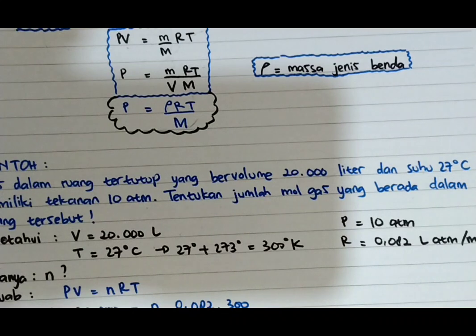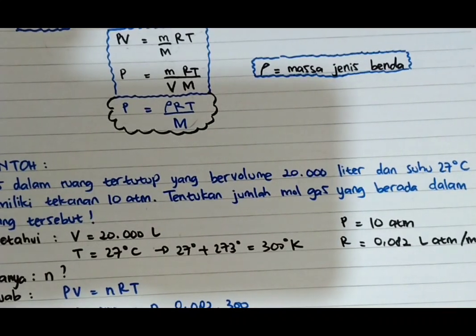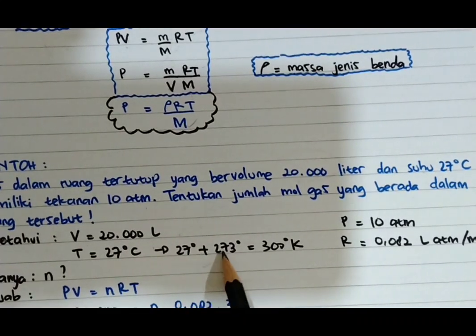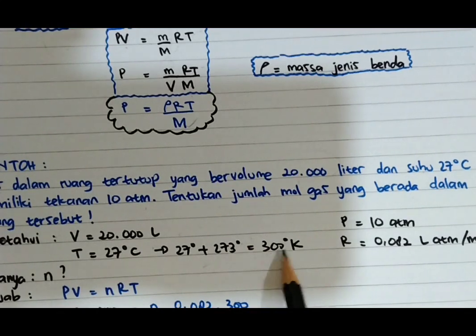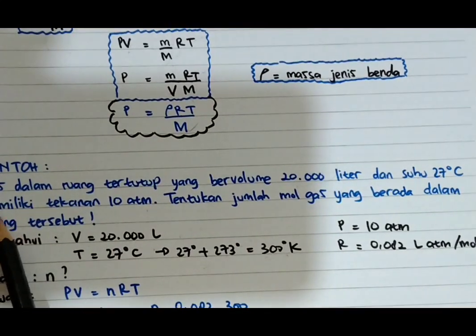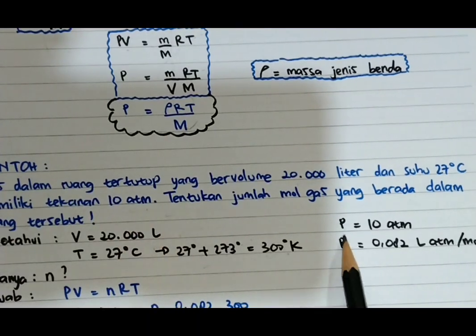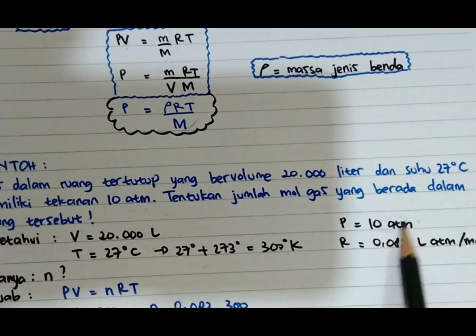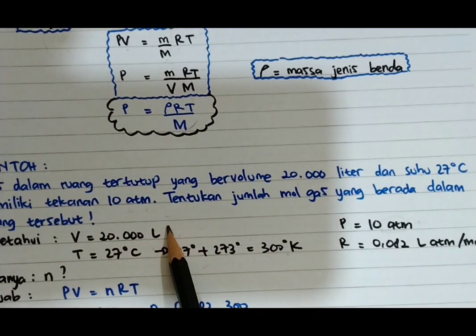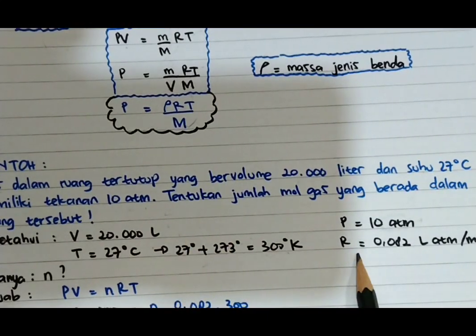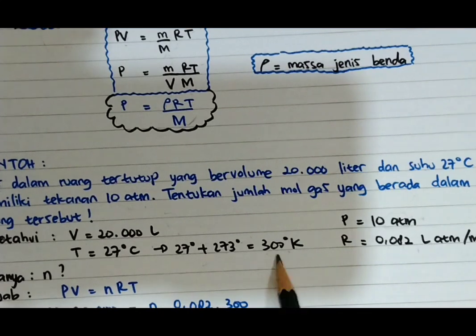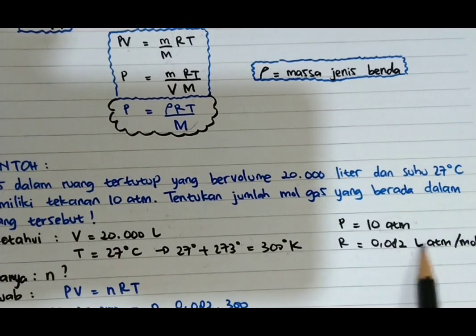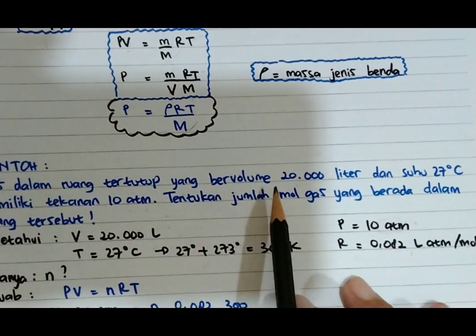Karena kita menggunakan hukum gas ideal, derajat suhunya harus kita ubah ke Kelvin dulu dengan cara 27 derajat plus 273 derajat menjadi 300 Kelvin. Memiliki tekanan 10 atmosfer berarti P sama dengan 10 atmosfer. Karena ada atmosfer, Kelvin, dan liter, maka kita bisa menggunakan R = 0,082 liter atmosfer per mol Kelvin.